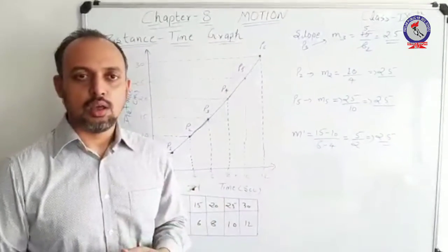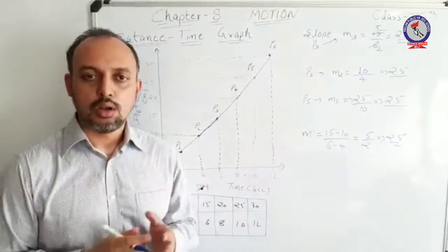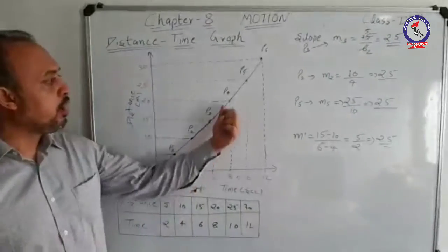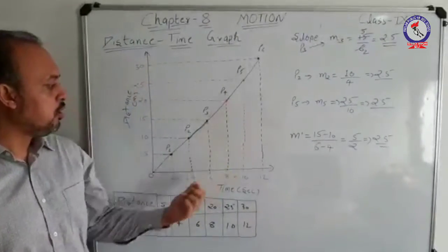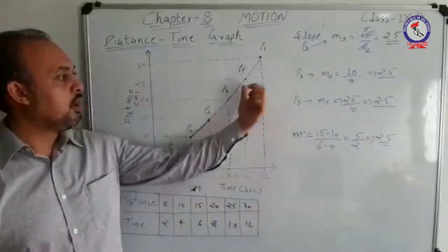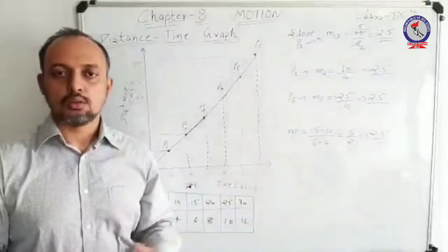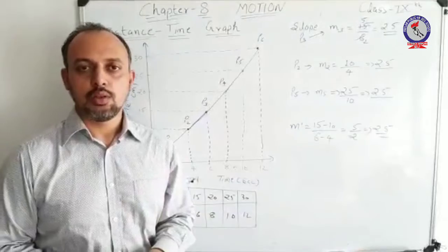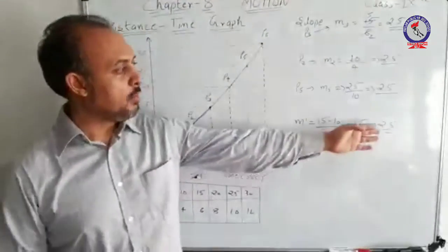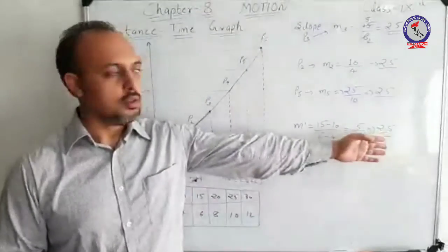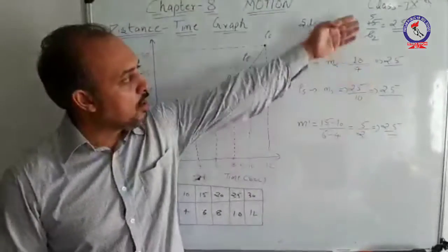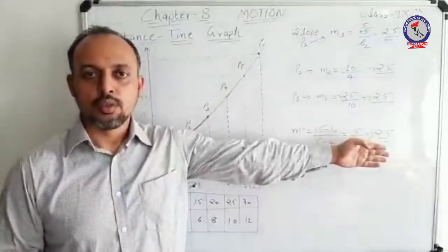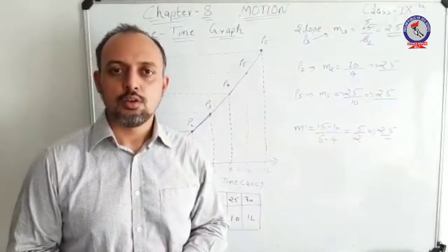This was just one example combination. You can take any combination of points — for instance, p2 and p4, or p1 and p5 — and calculate the slope in a similar manner. You can verify that the slope consistently comes out to 2.5. Since all slopes share a common value, it represents uniform motion.